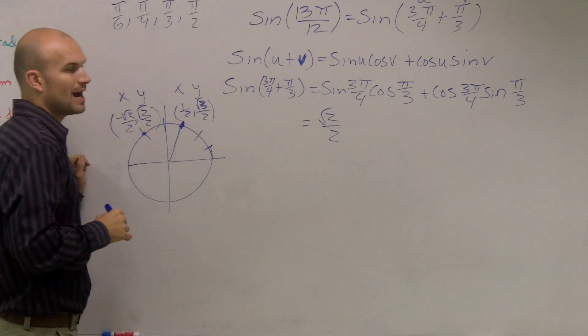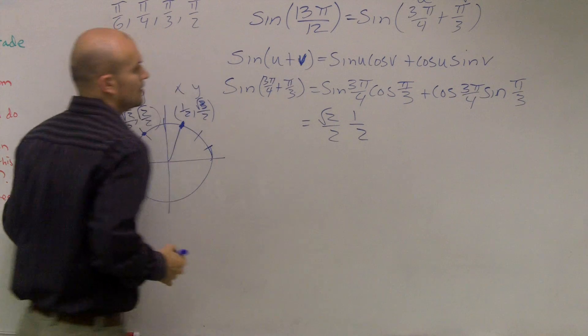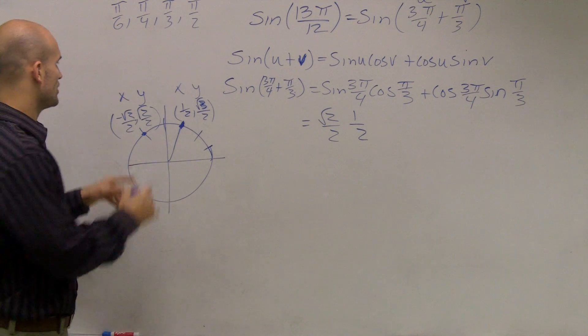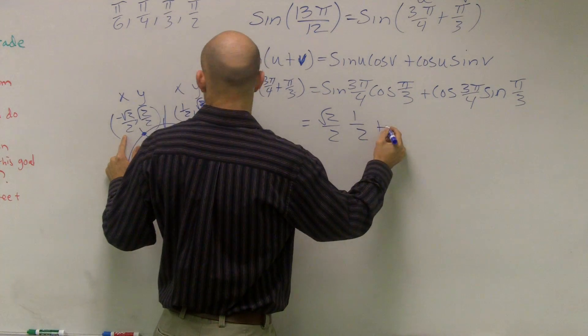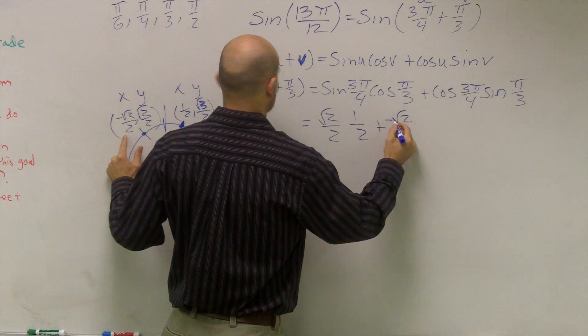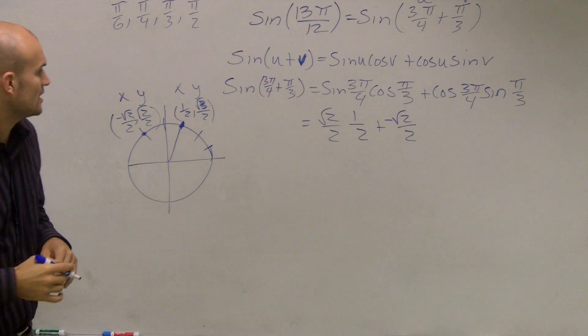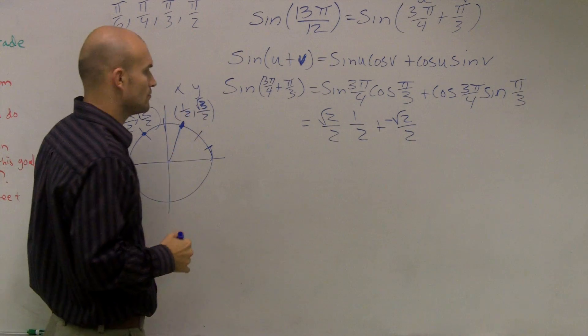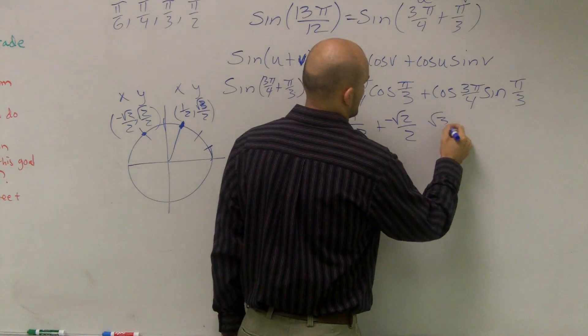The cosine of 3π over 4 is going to be negative radical 2 over 2, so plus negative radical 2 over 2 times the sine of π over 3, which is radical 3 over 2.